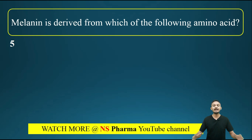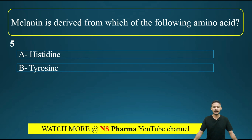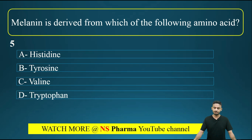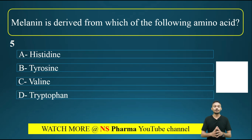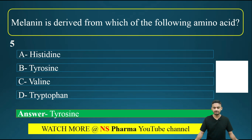Question number 5: melanin is derived from which amino acid? Melanin is a pigment. Options are: option A, histidine; option B, tyrosine; option C, valine; option D, tryptophan. The correct answer is option B, that is tyrosine. Melanin is derived from tyrosine.